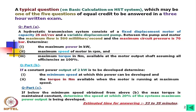In question Part A, a hydrostatic transmission system consists of a fixed displacement motor of capacity 25 milliliters per revolution and a variable displacement pump. Between the pump and motor, the maximum flow is 500 milliliters per second and the maximum circuit pressure is 70 bar. Determine: one, the maximum power in kilowatts; two, maximum speed of motor in RPM; and three, maximum torque in Newton meters available at the motor output shaft, assuming all efficiencies as 100 percent.